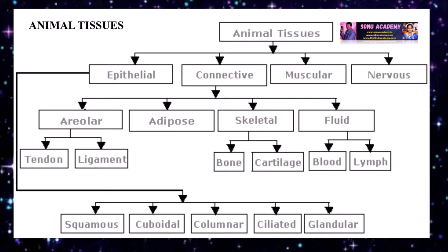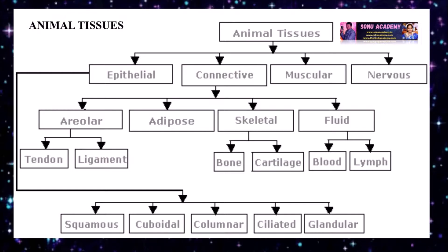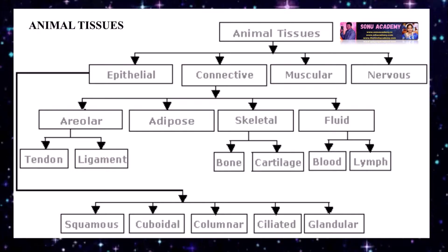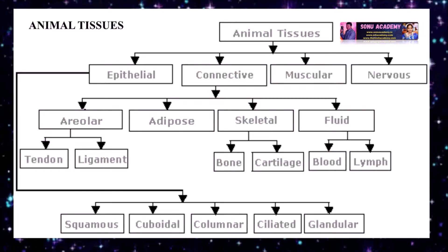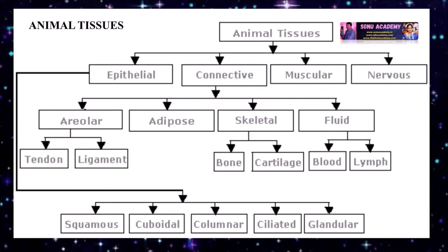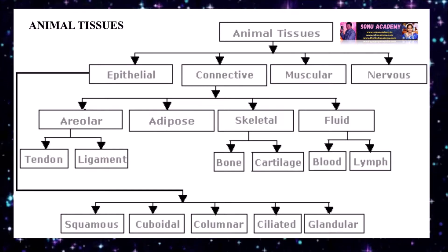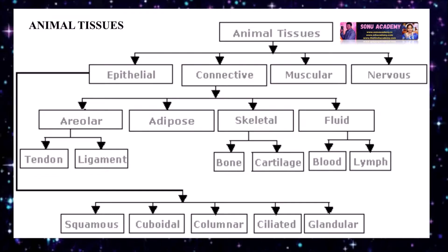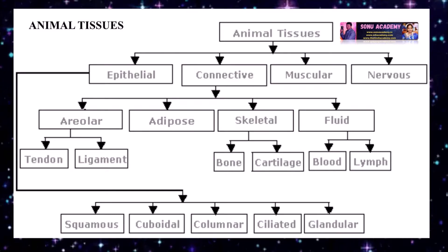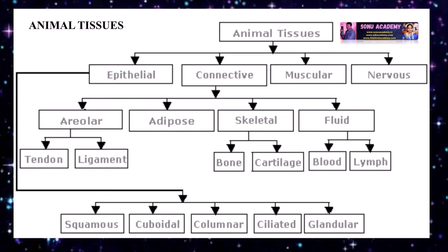Epithelial tissue is further divided into squamous, cuboidal, columnar, ciliated and glandular tissue. Connective tissue is divided into areolar, adipose, skeletal and fluid types. Areolar tissue includes tendon and ligament. Skeletal tissue divides into bone and cartilage. Fluid connective tissue includes blood and lymph.